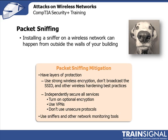For your wireless network, have layers of protection. Use strong wireless encryption, don't broadcast the SSID, and do other wireless hardening best practices. On top of that, independently secure all services — turn on any optional encryption, use VPNs, and don't use unsecure protocols. And don't forget, you can and should use sniffers and other network monitoring tools yourself to locate vulnerabilities. Detecting rogue packet sniffers on your network is not an easy task. By its very nature, the packet sniffer is passive, so it isn't going to have any signatures and might not throw any red flags. You can try looking for NICs in promiscuous mode as one place to start.